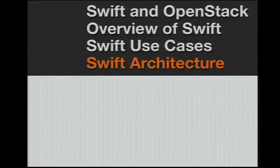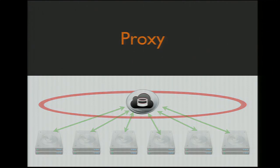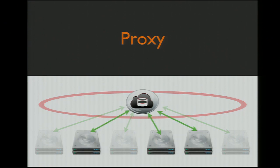On to Swift architecture. Swift basically has four different pieces inside a fully functioning cluster. The first piece is the proxy server — the front-end piece of Swift. This implements the Swift public API and is what clients directly deal with. When the proxy server receives a request, it will choose the appropriate backend servers from the storage nodes. For a cluster with three replicas, it will choose the three appropriate servers and send the request concurrently to the backend cluster.